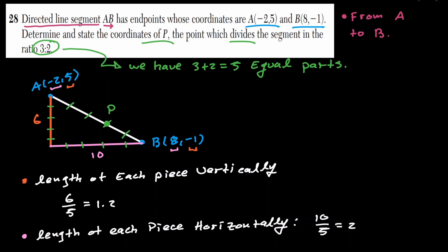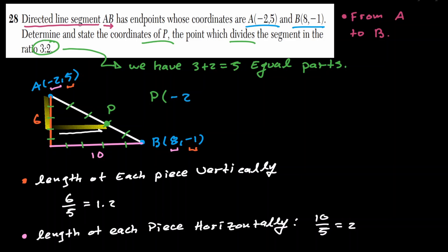To find the location of P, instead of moving 3 sections diagonally, we can move 3 sections vertically and 3 sections horizontally, since we know the length of each of those pieces. We start at the x-coordinate of A and move 3 of those sections to the right, adding x values. We are adding 3 sections, each with a length of 2.